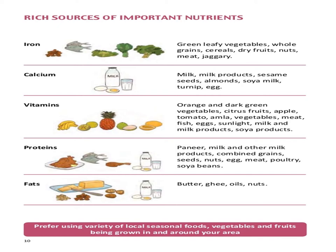Next are vitamins. The common vitamins required by our body are Vitamin A, B, C, and D. The sources of vitamins include different vegetables, fruits, meat, eggs, and soya products.